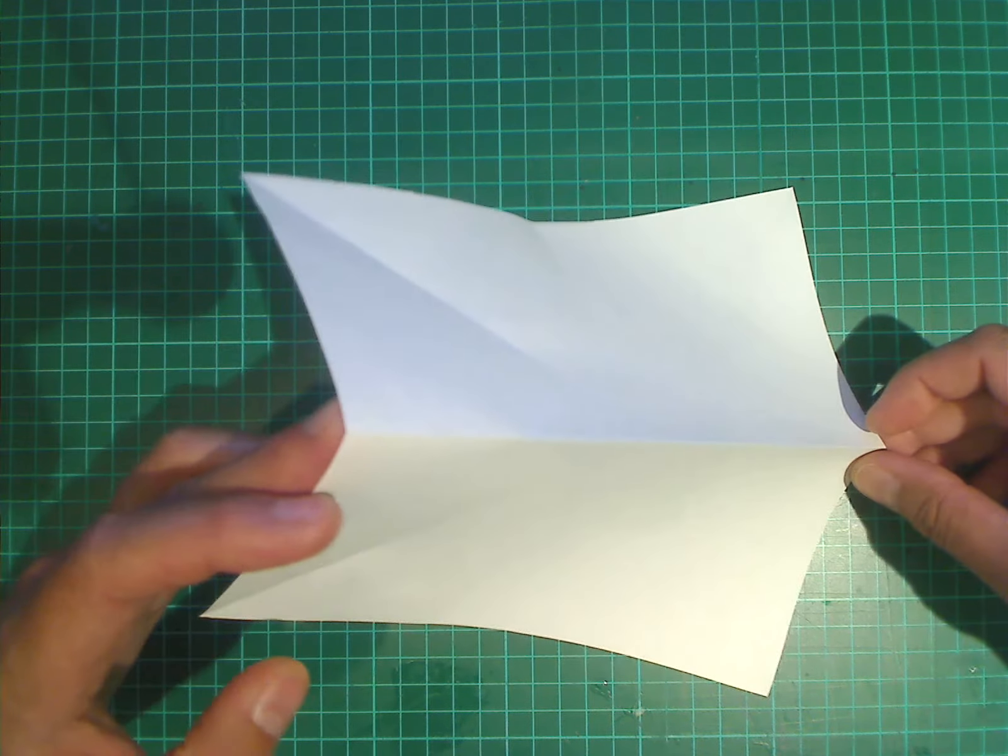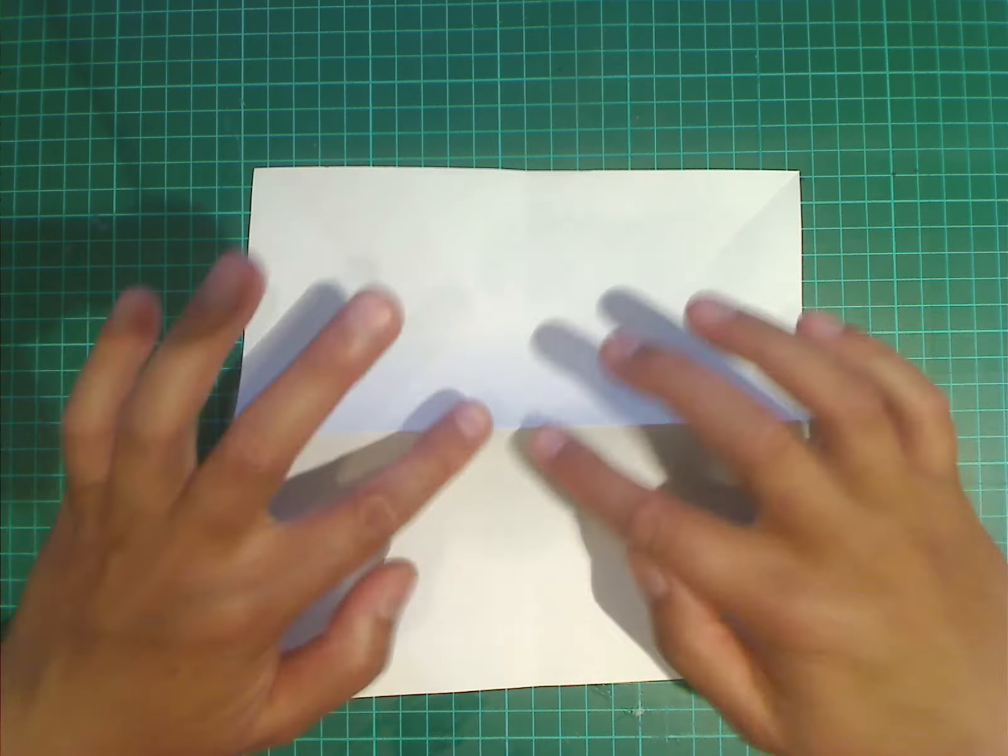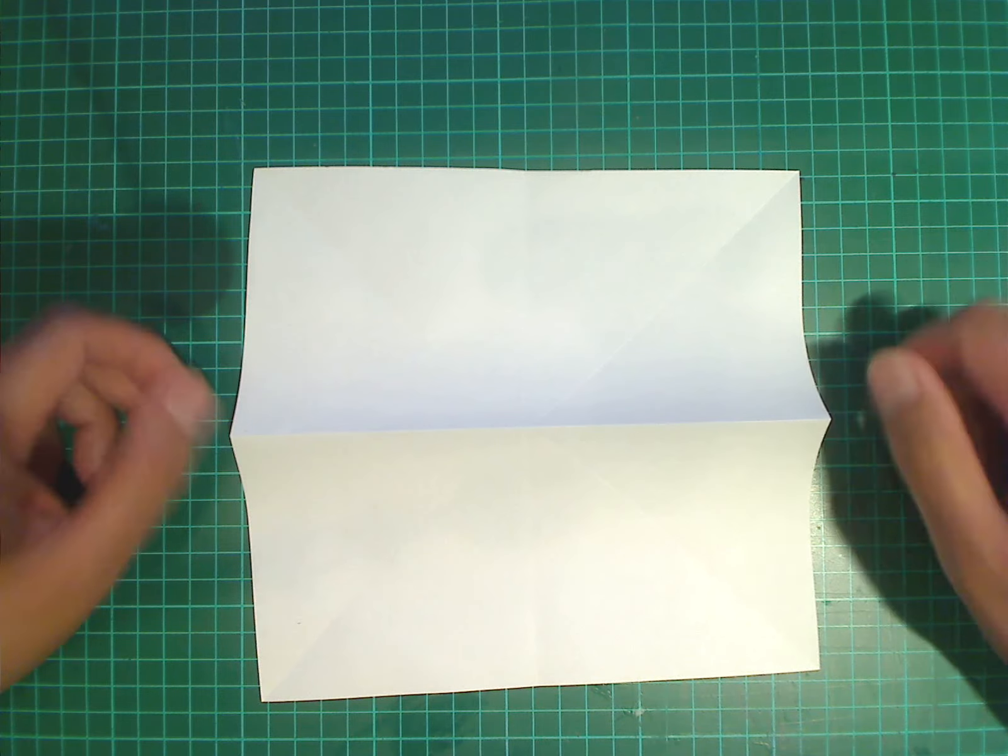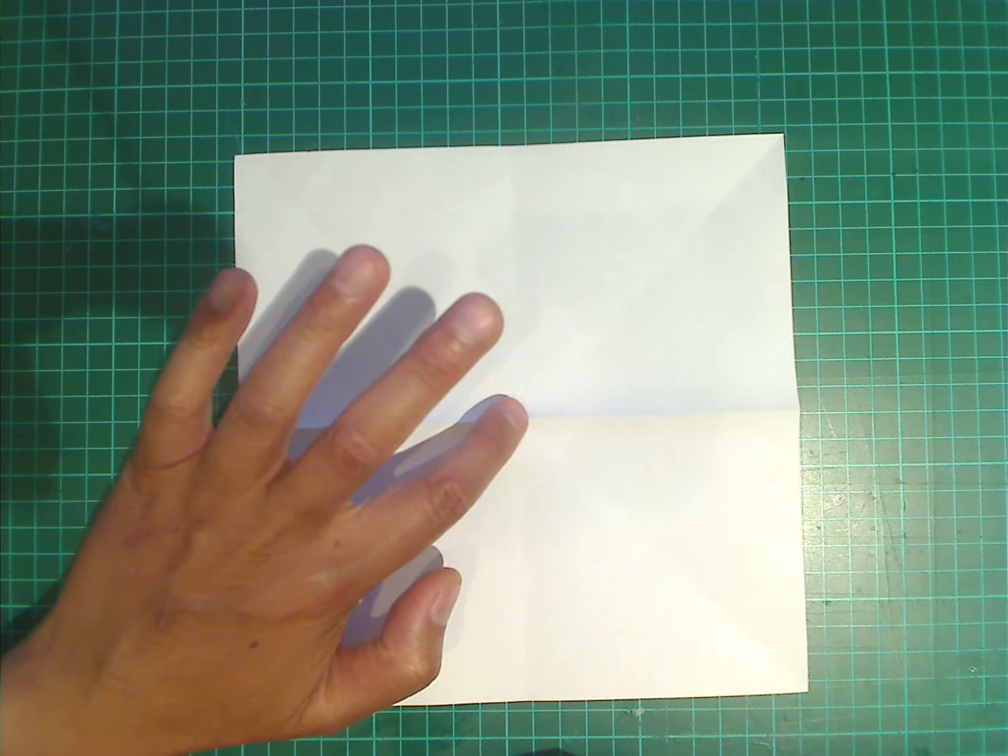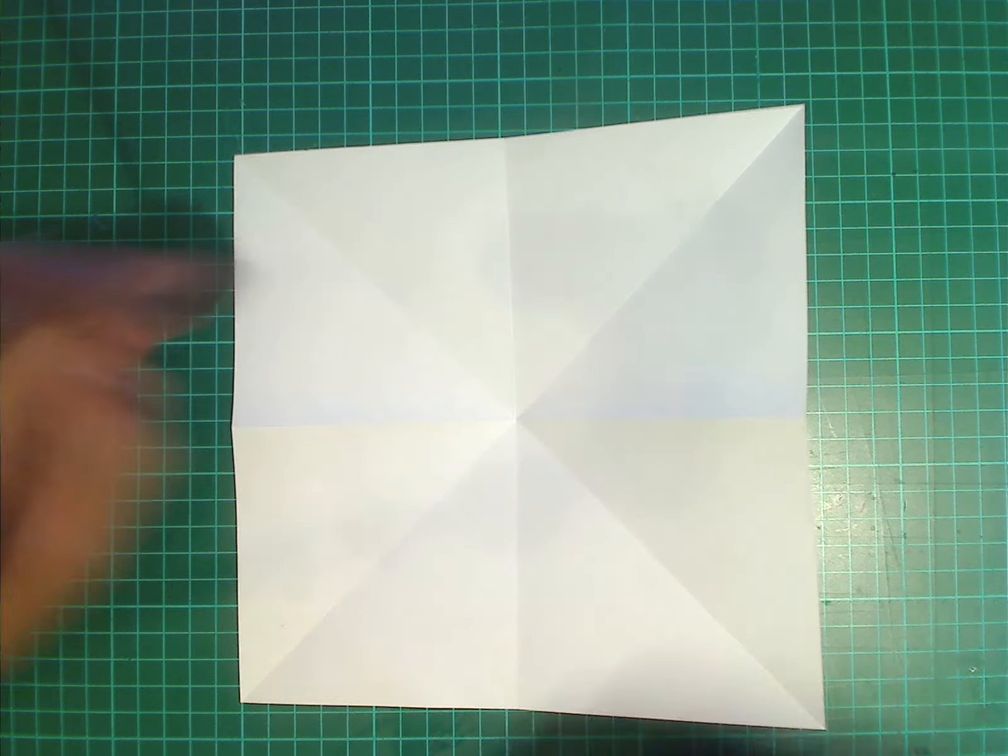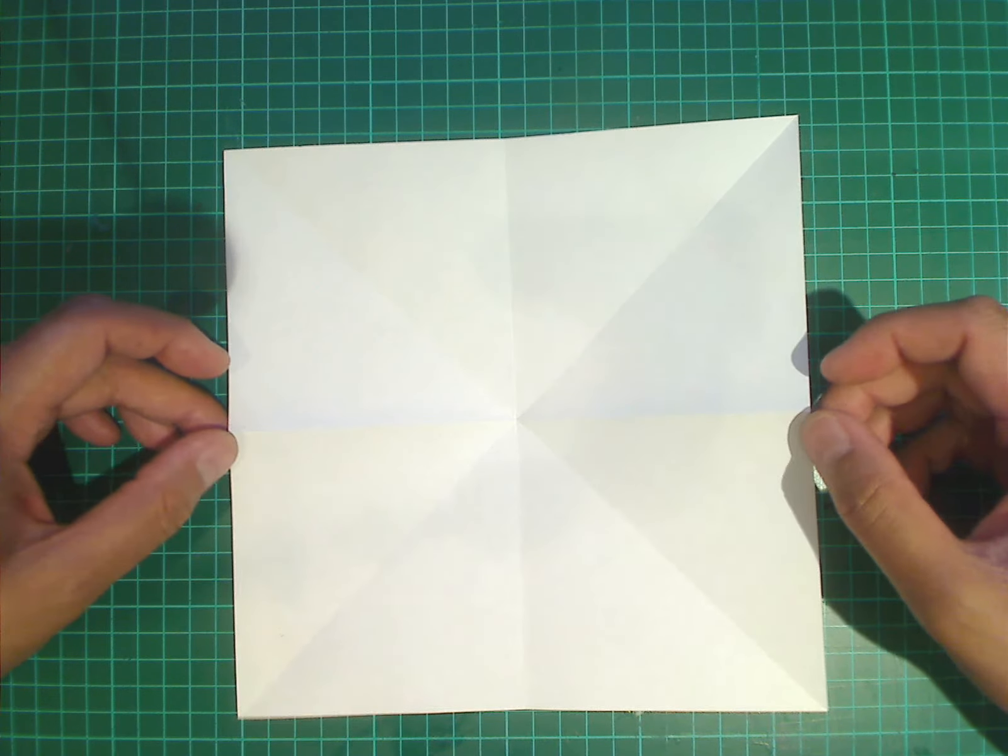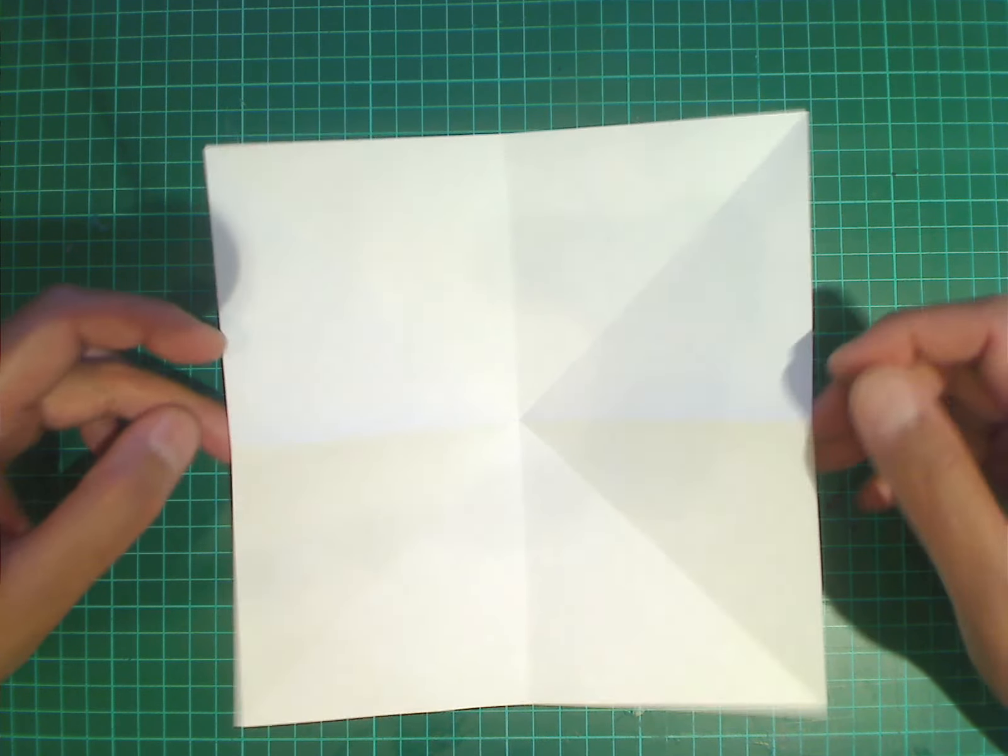What you should notice is that the paper will stand up and there's a peak in the middle. What we're going to do next is we're just going to simply push it in the middle. Just push it until it touches the table. And you will notice that this part kind of pops up.